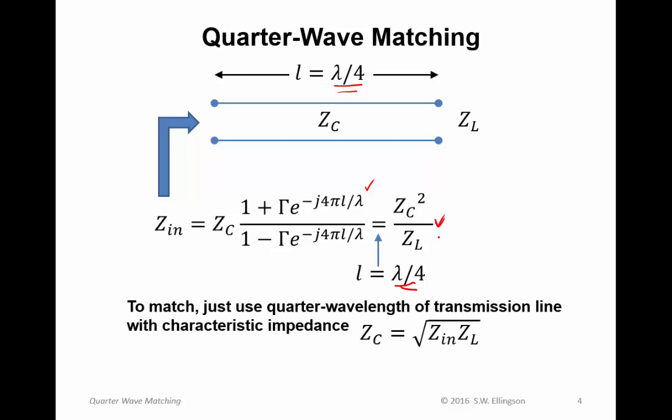Now to match, you just use a quarter wavelength transmission line, and use the characteristic impedance to achieve the matching. The characteristic impedance is obtained from this expression. You simply solve for the characteristic impedance.